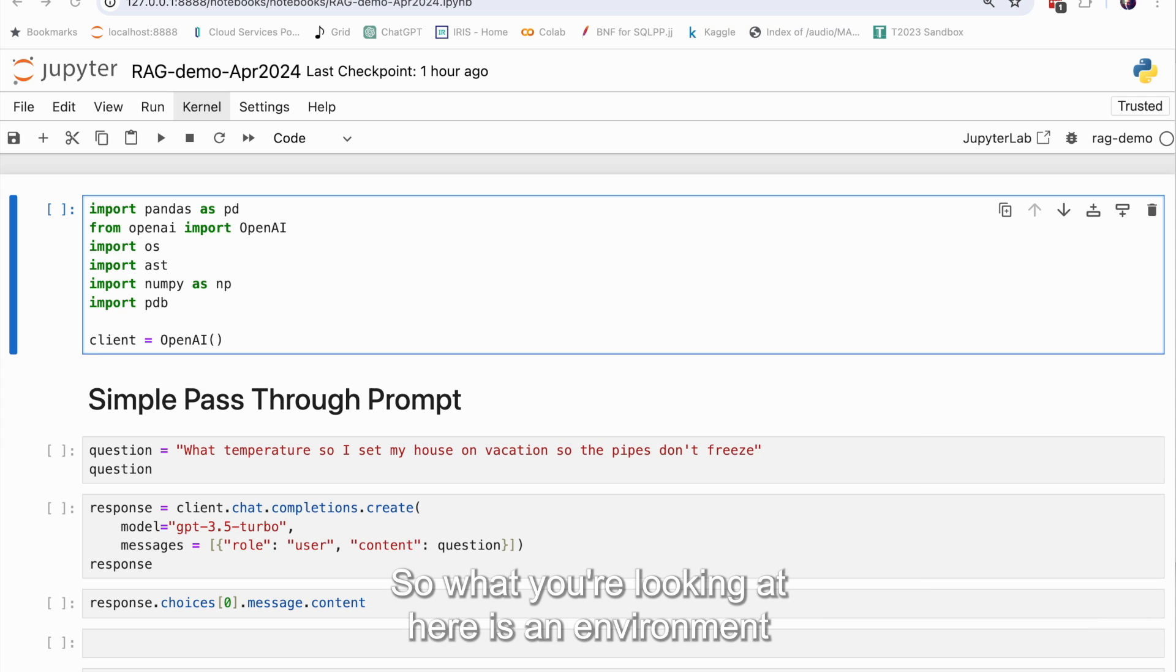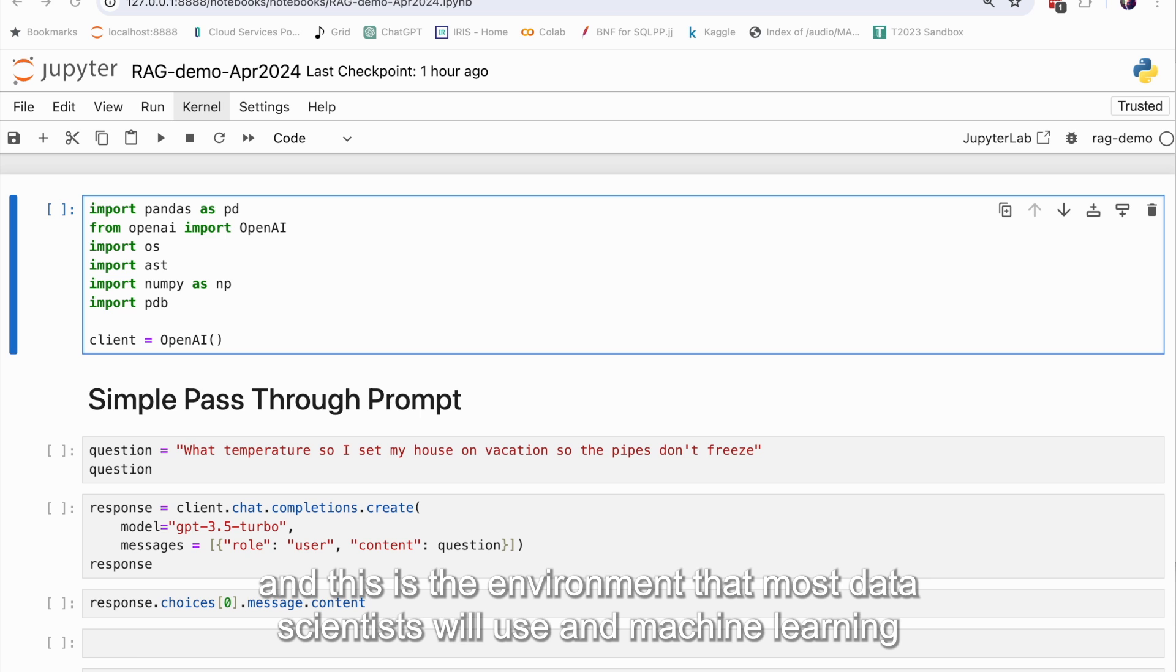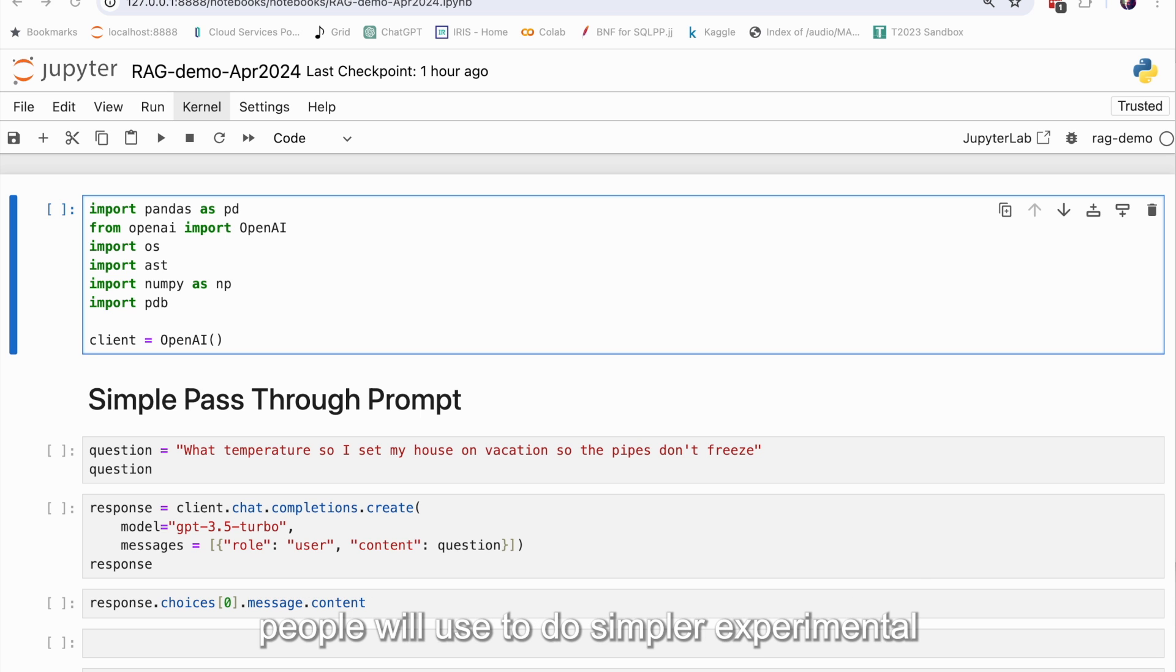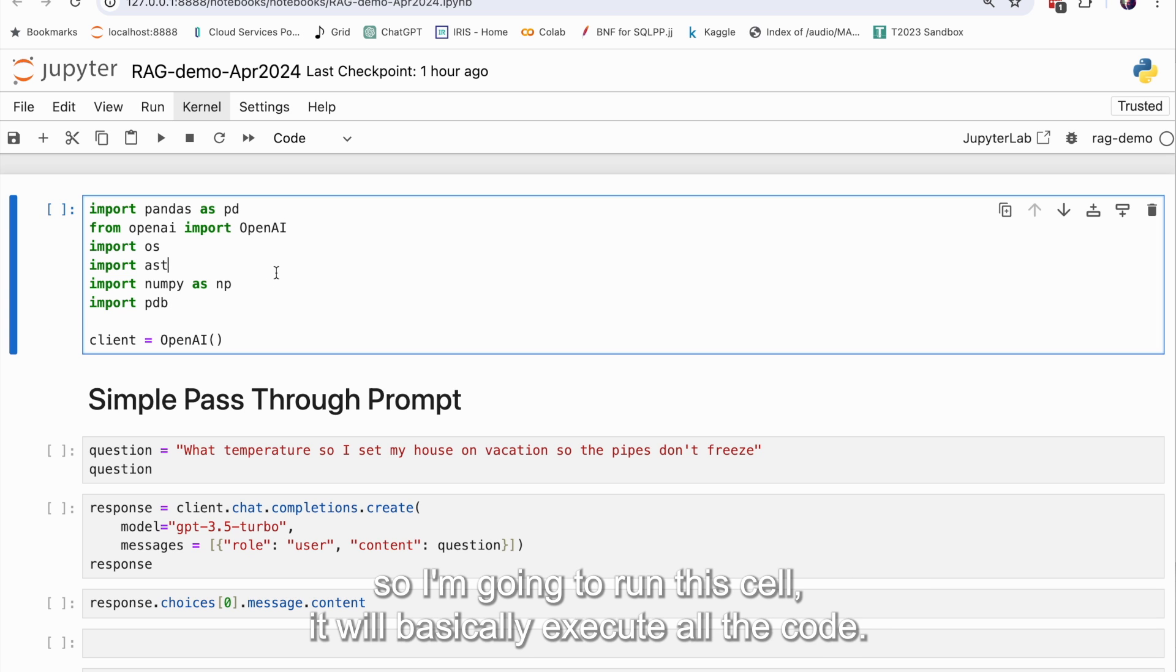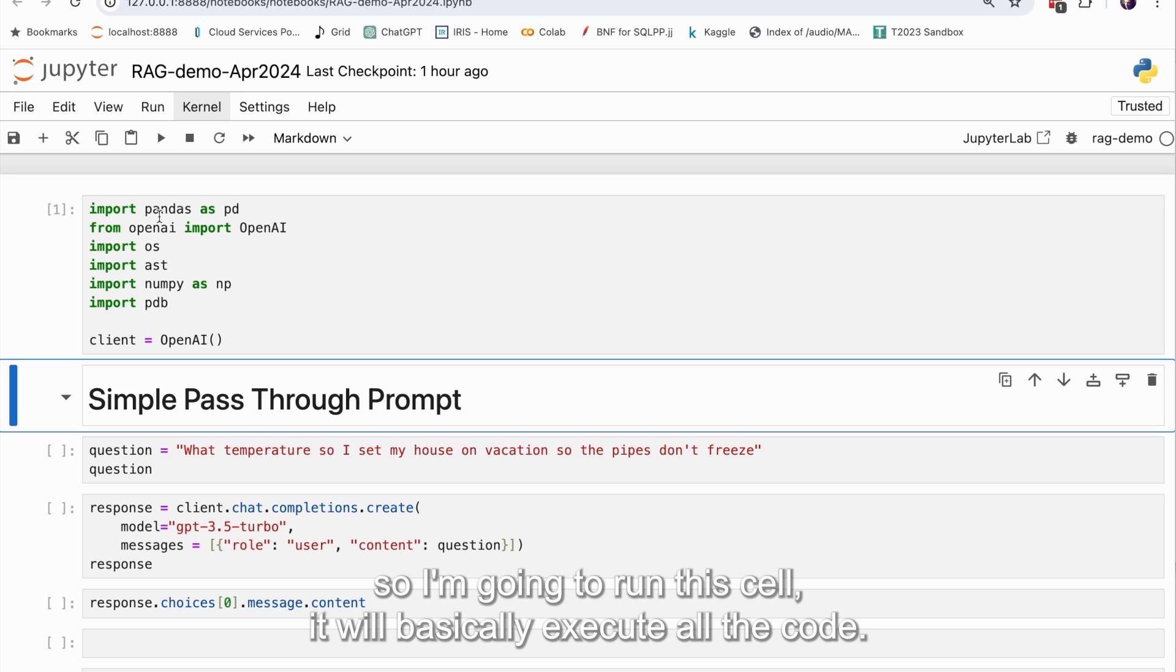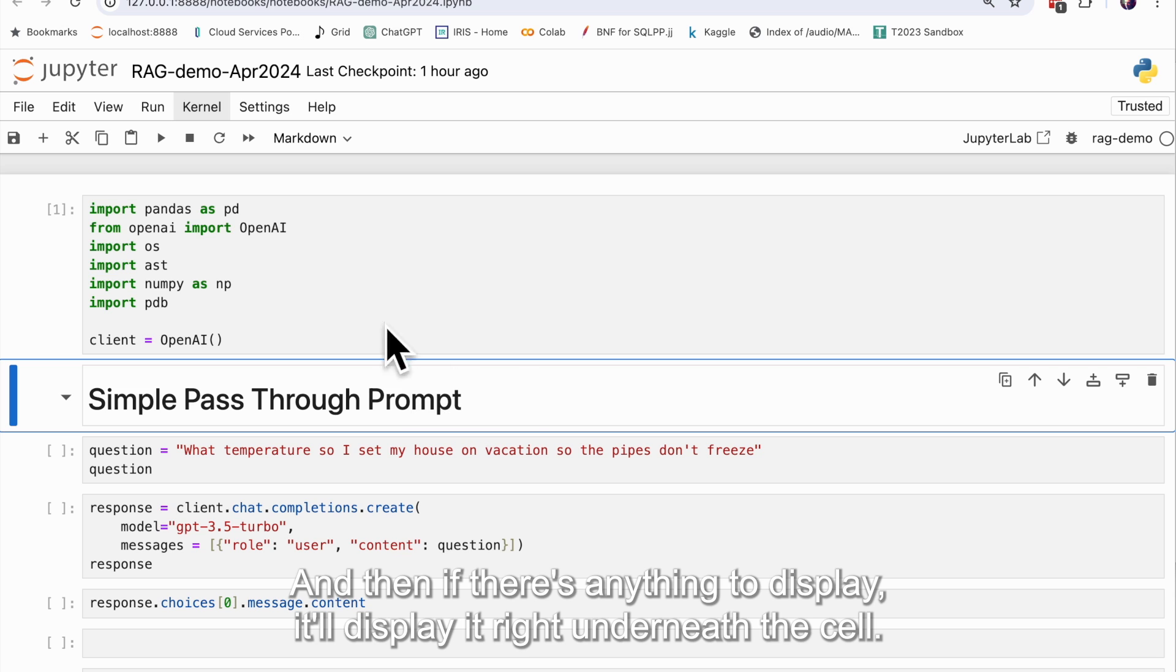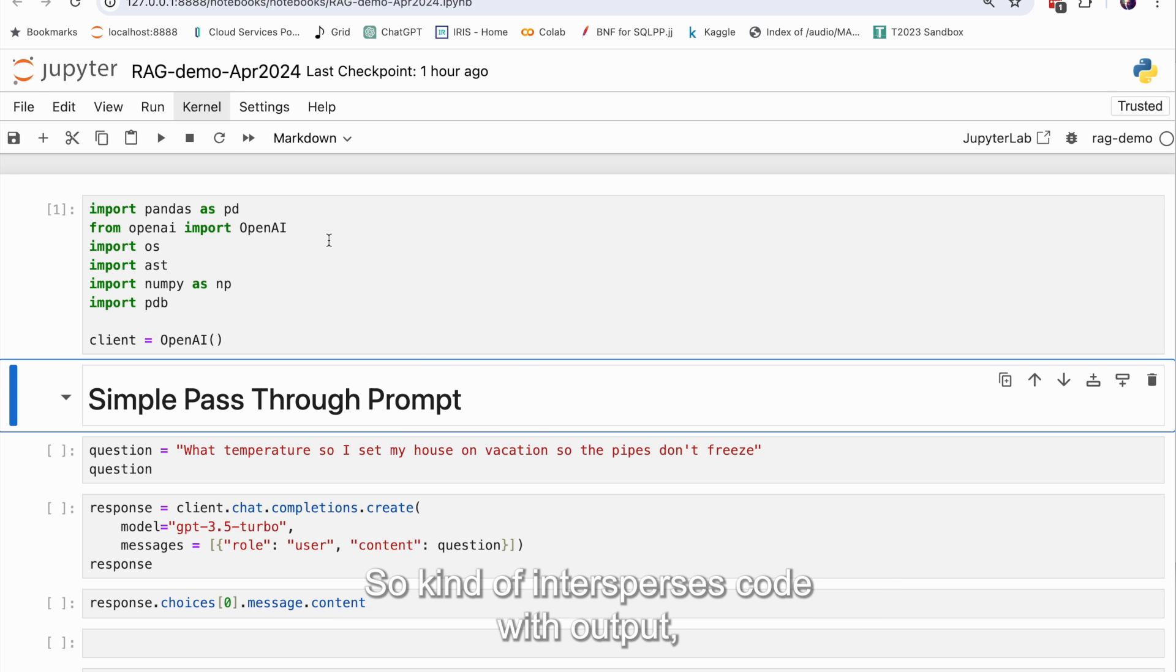So what you're looking at here is an environment called Jupyter Notebook, and this is the environment that most data scientists will use and machine learning people will use to do simpler, experimental kind of programs like this. So the way it works is you have code cells, and when you run a cell, so I'm going to run this cell, it will basically execute all the code, and then if there's anything to display, it'll display it right underneath the cell. So it kind of intersperses code with output, which is a nice environment for this kind of work.